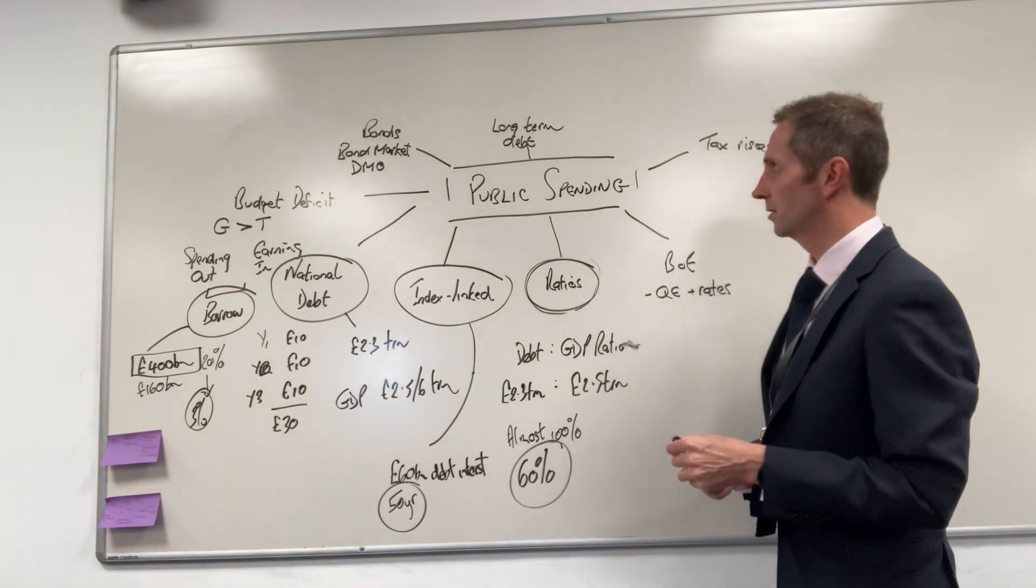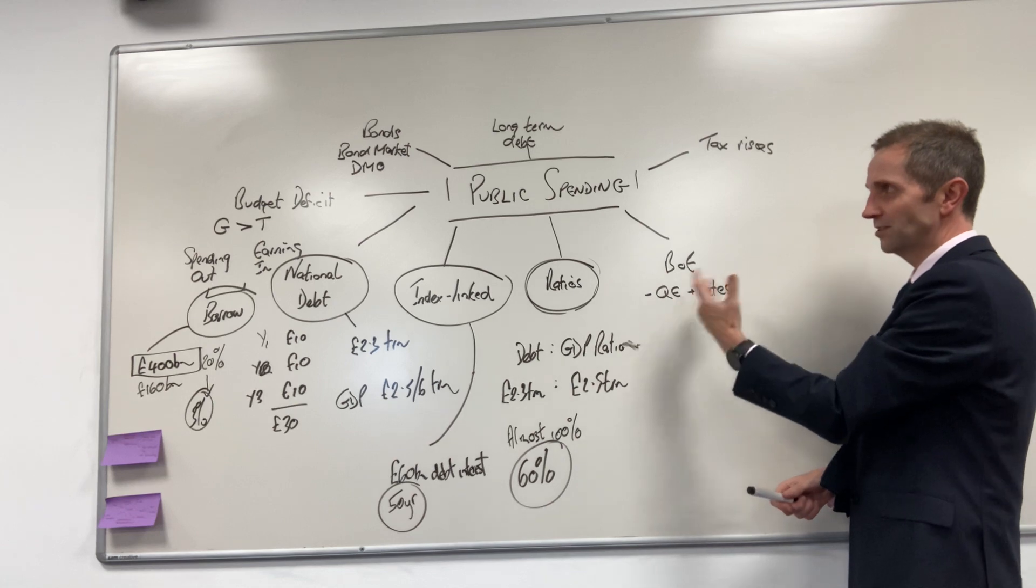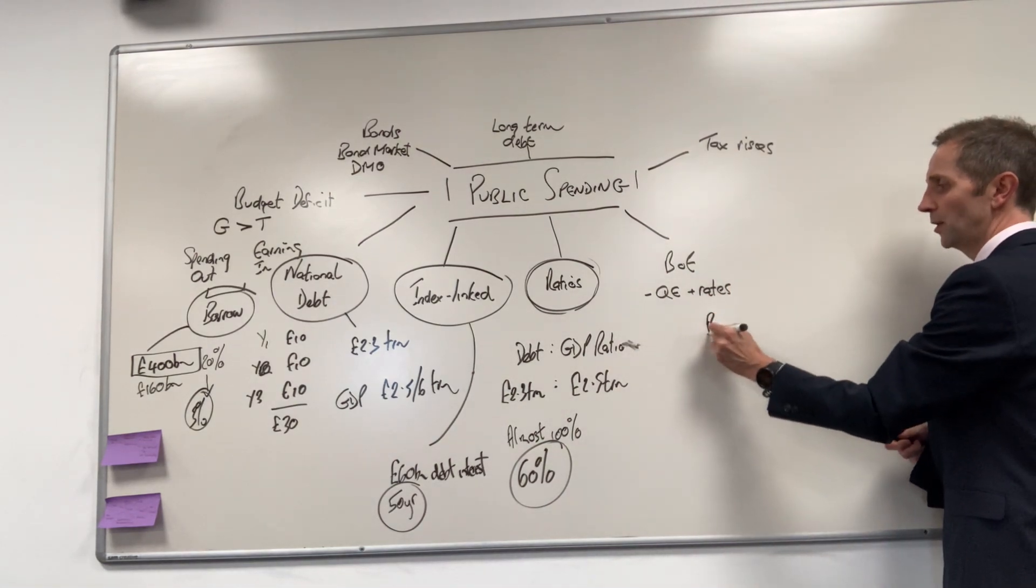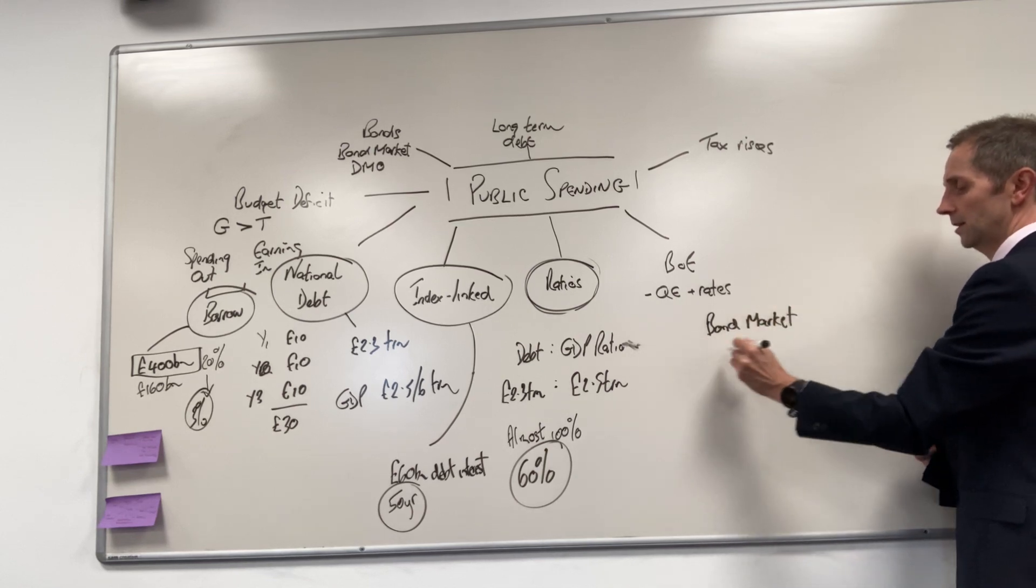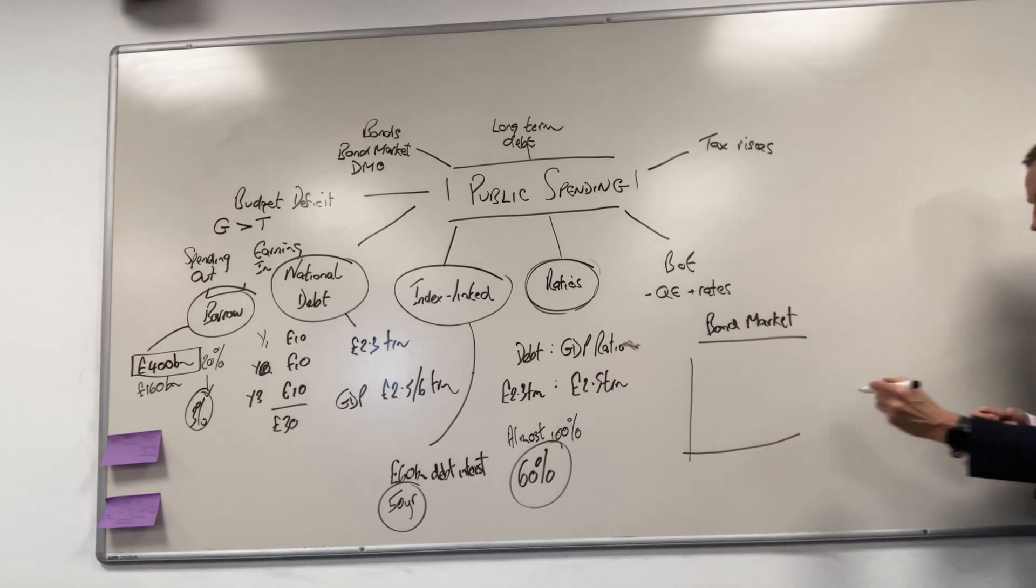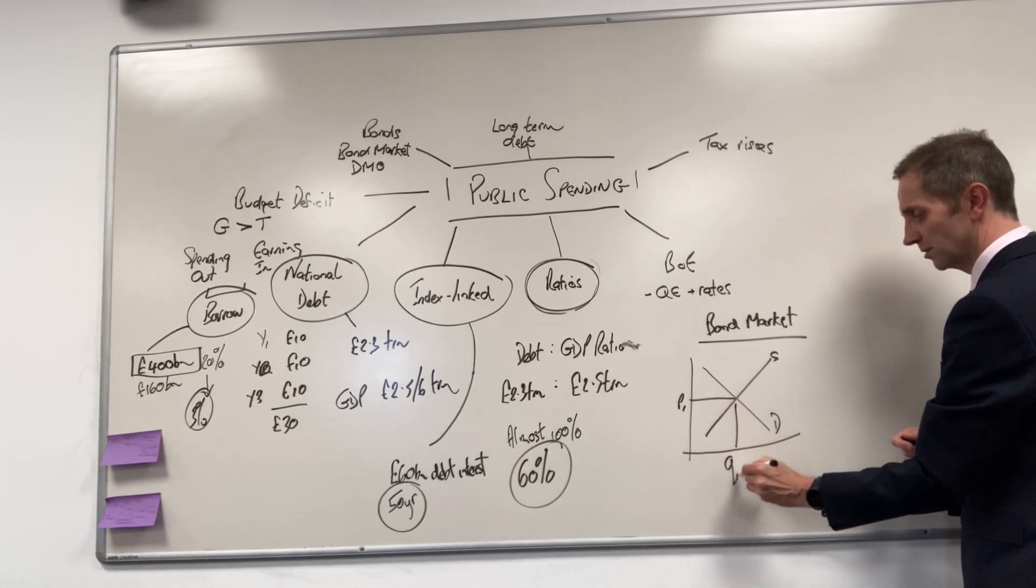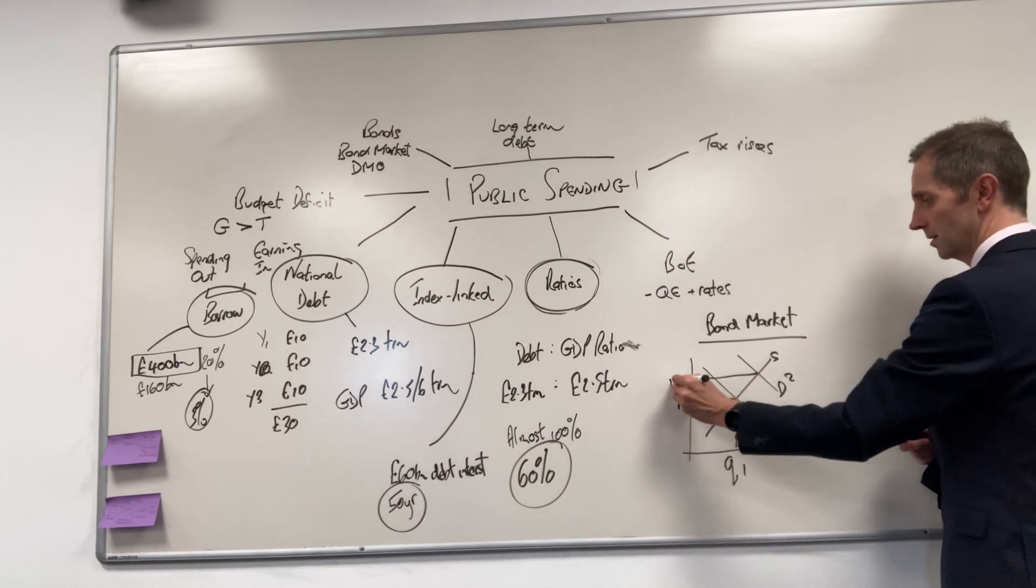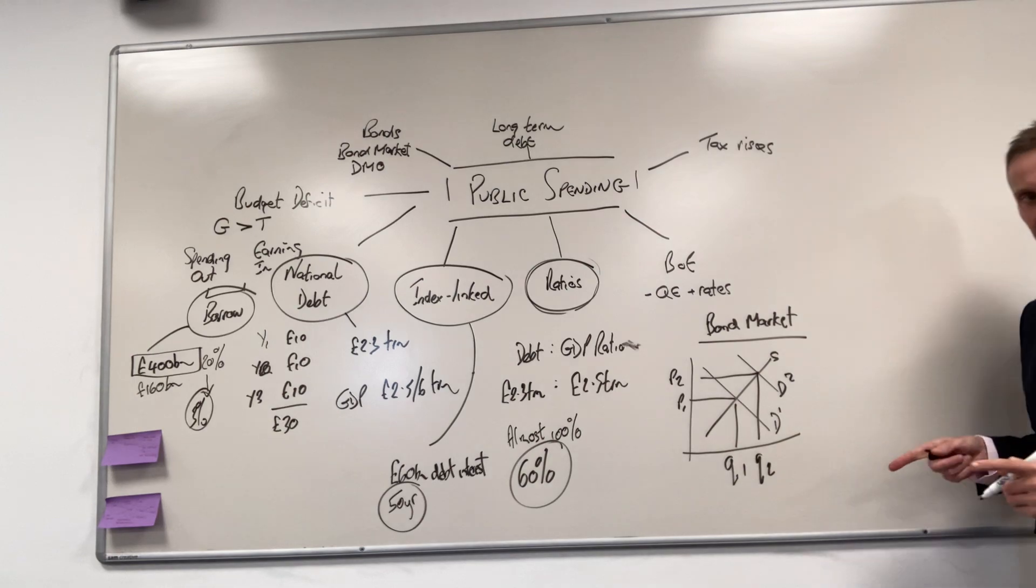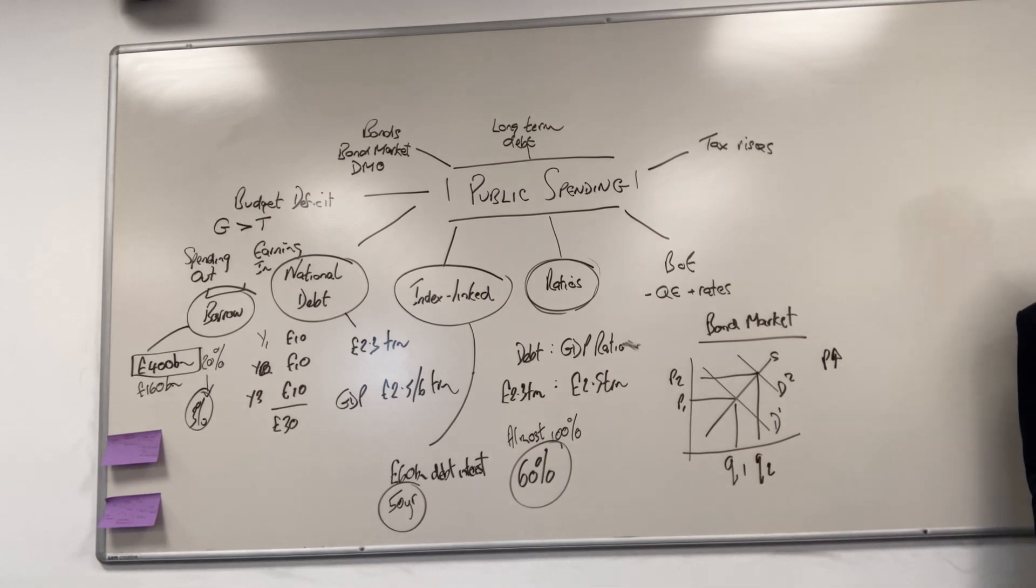Bonds then. The bond market, the Debt Management Office, the Bank of England, QE and the rates are sort of interlinked. First of all, in the bond market, what's going to be happening to the demand for bonds? You've got just a very straightforward basic supply and demand analysis. The general gist is demand for bonds is on the up. The price of the bonds are going up, but the crucial point here is when the price of the bonds go up, the yields, the interest rates, go down.